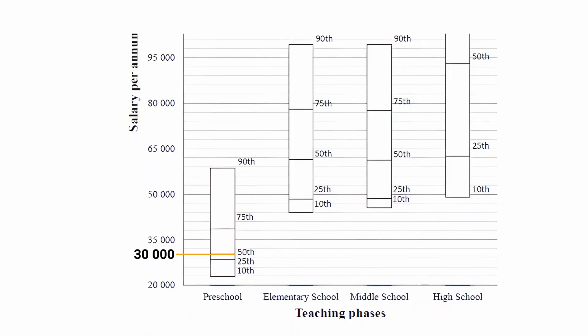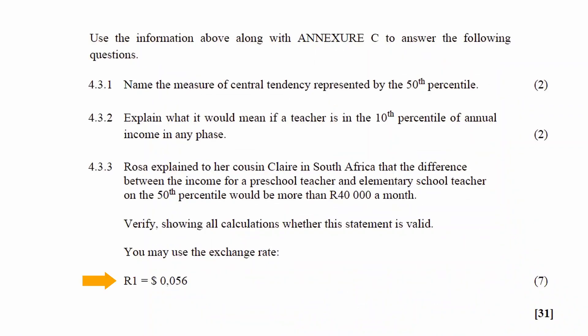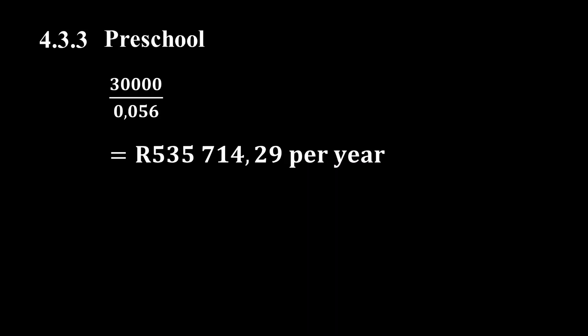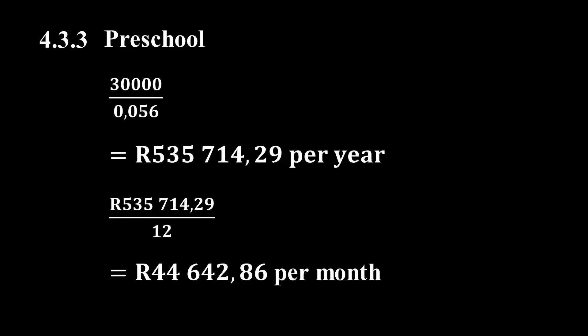For the preschool teacher, the annual salary of 50 000 US dollars is divided by the exchange rate of 0.056 dollars per rand, giving an annual salary of 892 857 rand 14 cents per year. Dividing this by 12 months gives a monthly salary for a preschool teacher of 44 642 rand 86 cents per month.